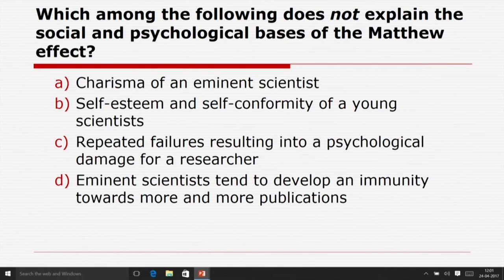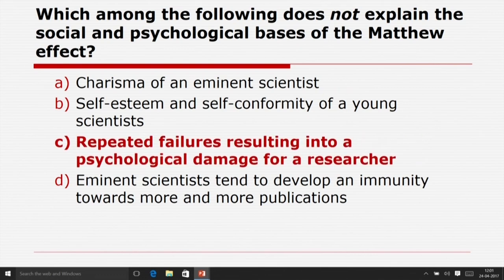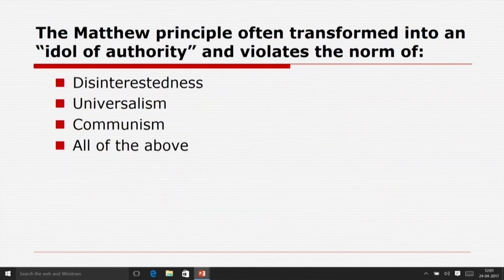Which of the following does not explain the social and psychological basis of the Matthew effect? Charisma of an eminent scientist, self-esteem and self-conformity of a young scientist, repeated failures resulting in psychological damage of a researcher, or eminent scientists developing immunity towards more publications. The answer is: repeated failures resulting in psychological damage. The Matthew principle often transforms into an idol of authority and violates the norm of universalism.